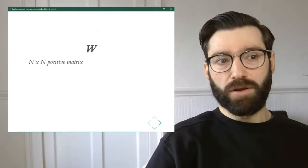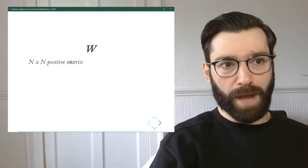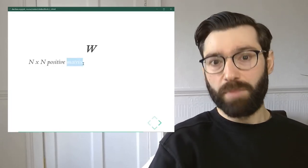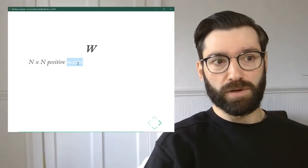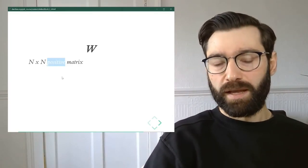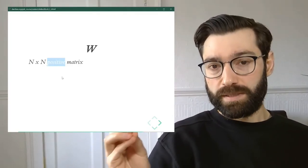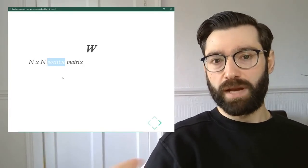The first thing you need to know is that it's an n by n positive matrix. It's a matrix, which is to say it's a collection of numerical values or numbers. It's positive, which means that these values are either zero or greater than zero. You cannot have a matrix with a negative number.